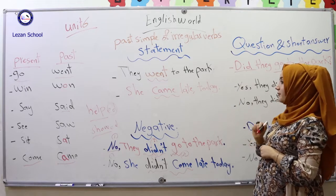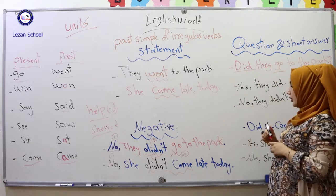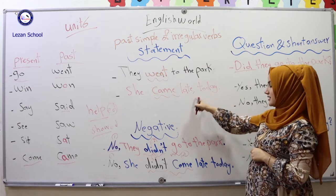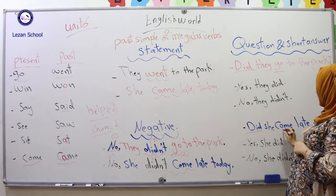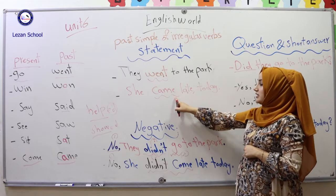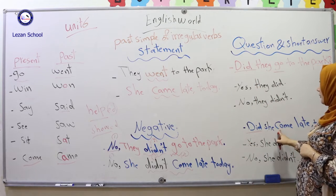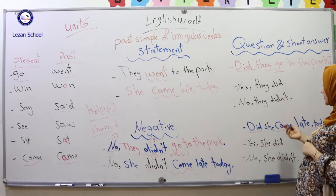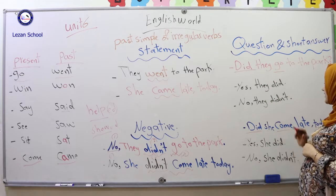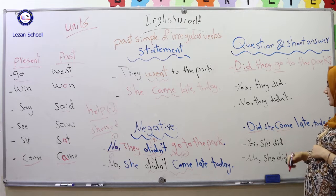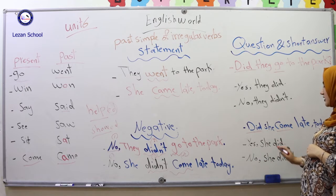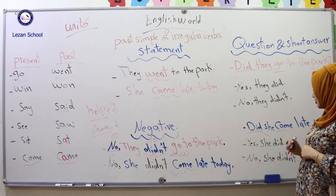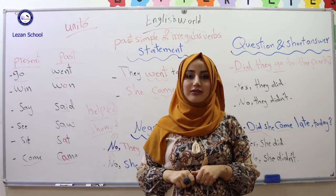For the second sentence, 'She came late today' — to make it a question, write 'did' from the beginning because it is past tense. In the statement we have 'came,' but in the question we write the present form 'come.' So: 'Did she come late today?' The short answers are: 'Yes, she did' and 'No, she didn't.' I hope you take benefit from this video. See you later.